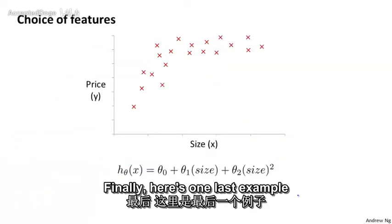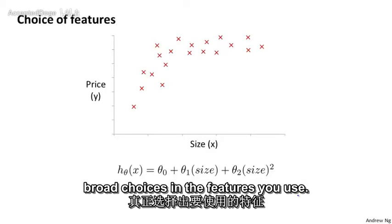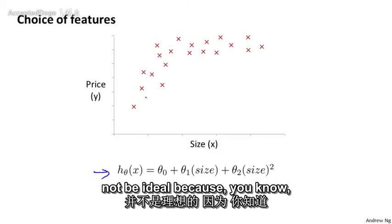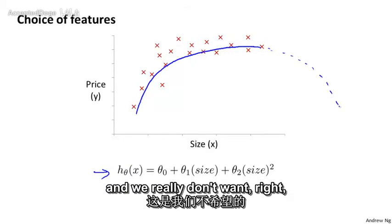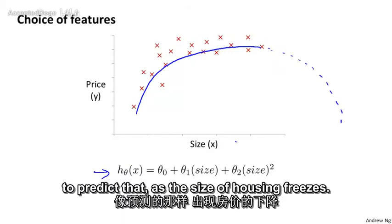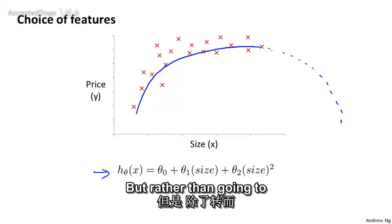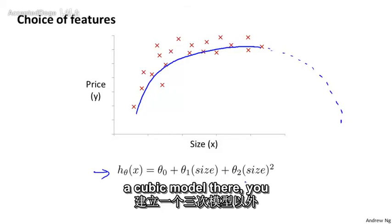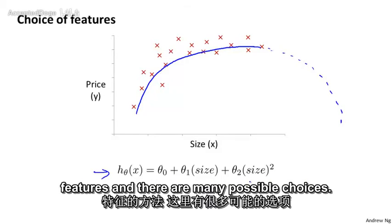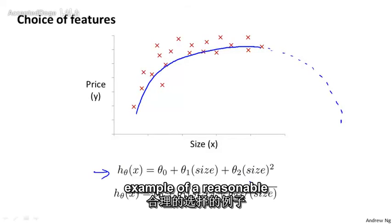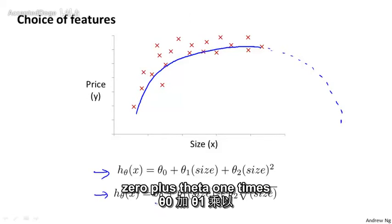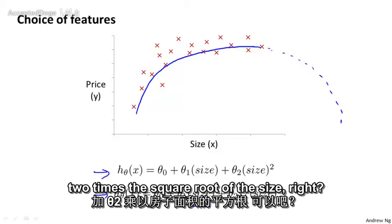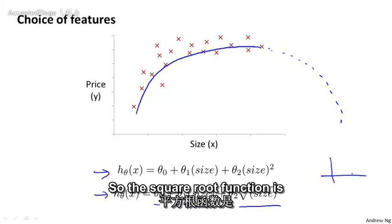Finally, here's one last example of how you really have broad choices in the features you use. Earlier we talked about how a quadratic model like this might not be ideal, because maybe a quadratic model fits the data okay, but the quadratic function goes back down, and we really don't want, right, housing prices that go down to predict that as the size of the house increases. But rather than going to a cubic model, there you have maybe other choices of features, and there are many possible choices, but just to give you another example of a reasonable choice. Another reasonable choice might be to say that the price of a house is theta zero plus theta one times the size, and then plus theta two times the square root of the size, right? So the square root function is this sort of function.